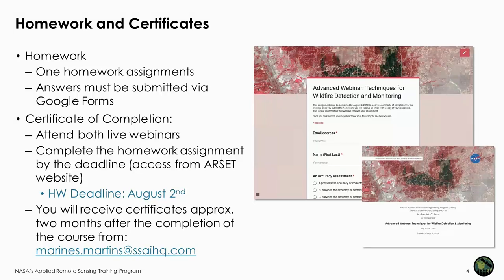There will be one homework assignment for this course, which will be available after this session. The homework deadline is August 2nd. In order to receive a certificate of completion, you must attend both live webinars and complete the homework by the deadline. You will receive the certificate about two months after the completion of the course.